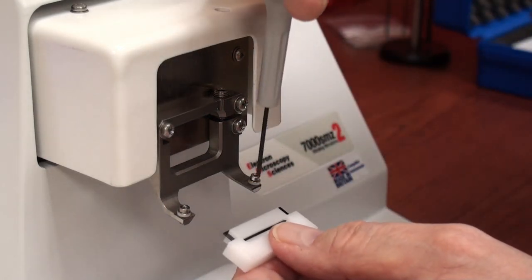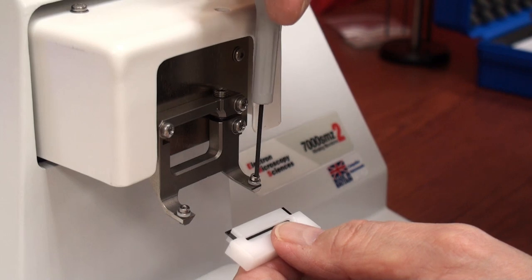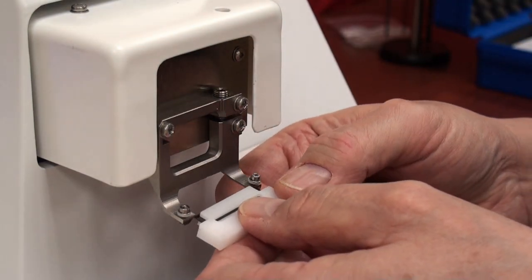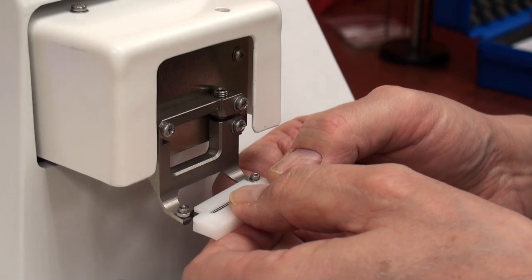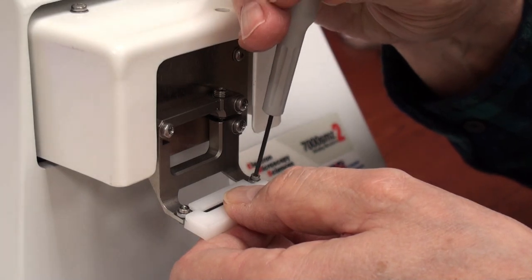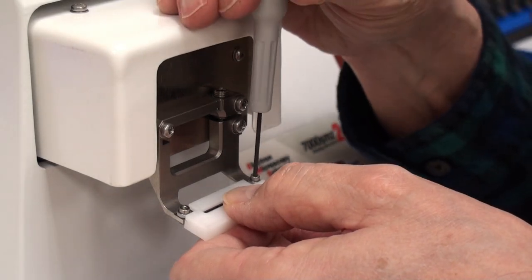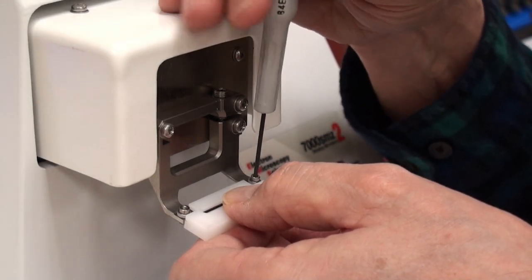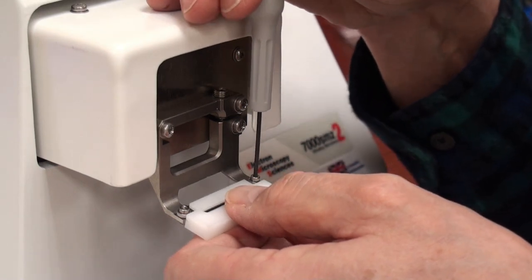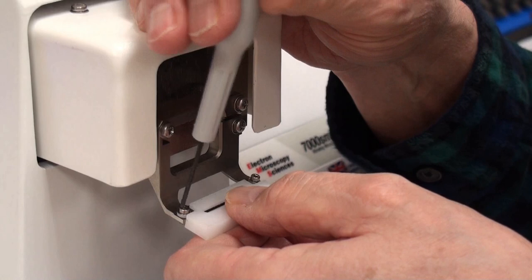If you don't have these loosened enough, it's a little bit more difficult. There is a cutout on the knife holder. Once it's in place and it's butted up against the rear of the knife holder, you can tighten it down.